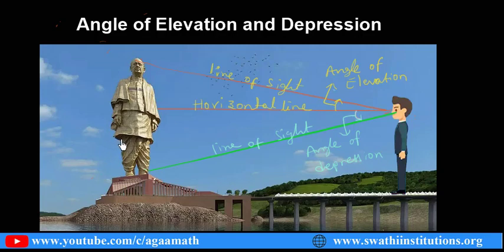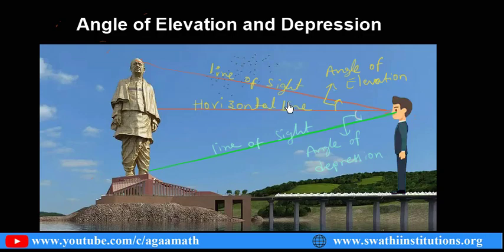Few more things to remember. All objects such as towers, trees, ships, mountains, etc. — for example a tower which is 10 meters tall — are represented as a simple line. The height of the tree or the height of the tower is represented with a line.